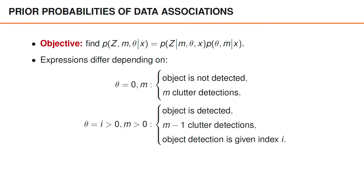This joint event actually tells us three things. First, that the object is detected, since theta is greater than zero. Second, that we have m minus one clutter detections, since one of the measurements is an object detection. And finally, that the object detection is given index i.